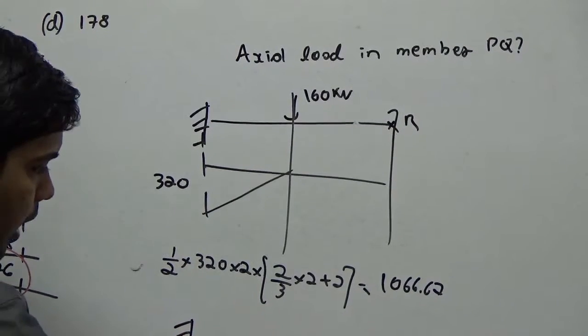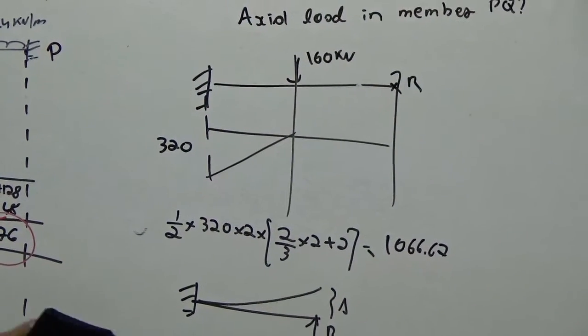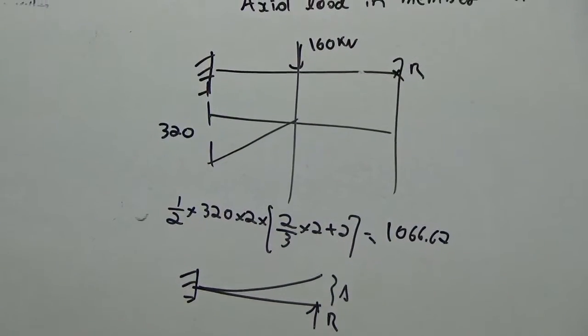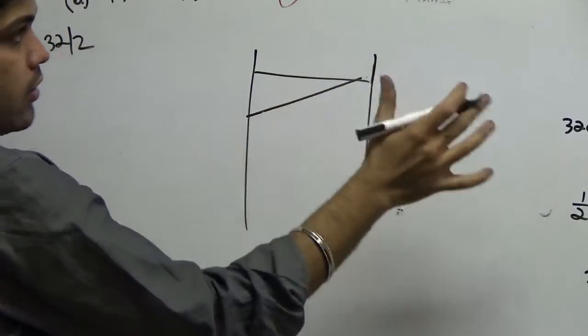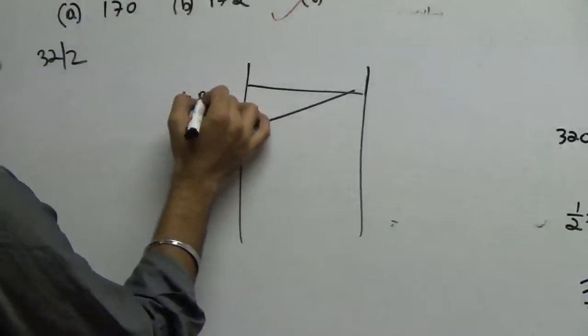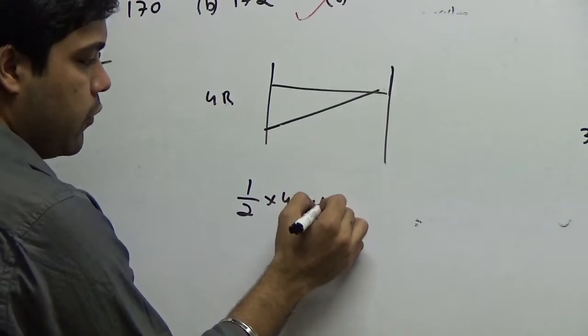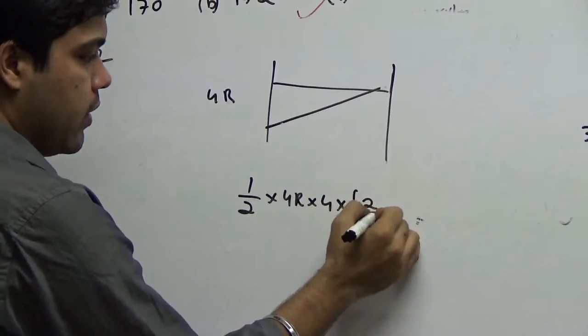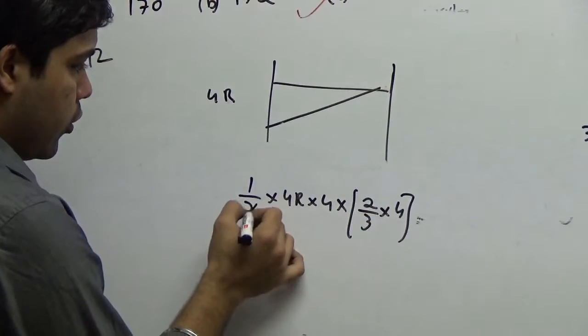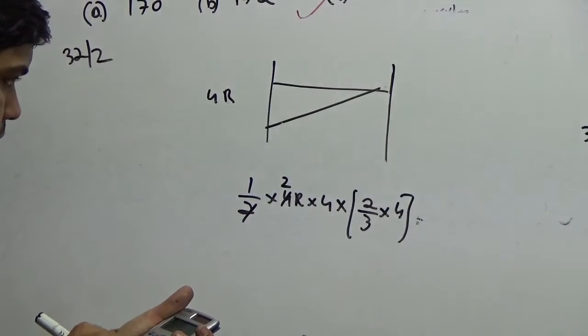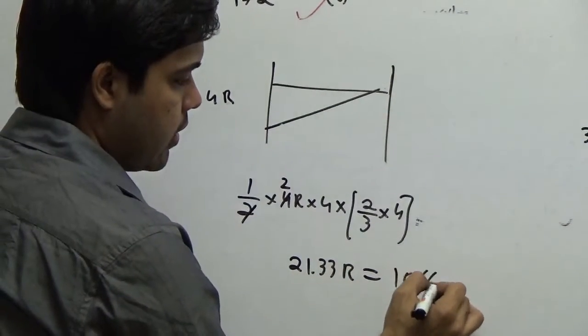Also I said that there is R load which causes a deflection. So in this case, I'll do it here. In this case my MAT theorem will be applied like this is R and I have here. Now the total span is 4 meter. So I have 4R, R into 4. So now the deflection value for me is 1 by 2 into 4R into 4, that is your area into 2 by 3 of 4. So this gives you 4 to the 8. Your 2 gets cancelled with this. 8 into 8 divided by 3, that gives you 21.33 R. This has to be equated with 1066.67.